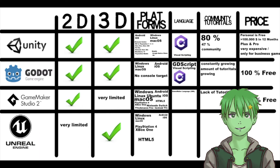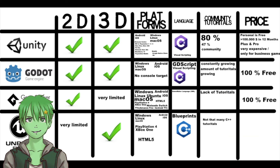Unreal Engine uses Blueprints, which is visual scripting, and it heavily focuses on Blueprints. However, Blueprints can reach their limits, so at some point you may need to use C++, which is really similar to C#. Most tutorials for Unreal Engine are Blueprint tutorials, so there aren't many C++ Unreal Engine tutorials. Unreal Engine is 100% free if you make less than $1 million with your game, which is really unlikely to happen — even more so than Unity's $100,000 threshold.